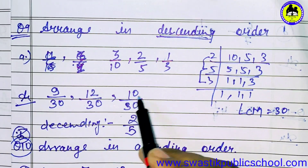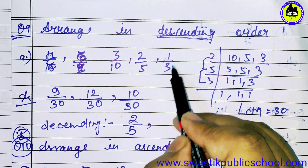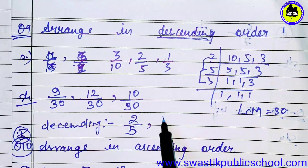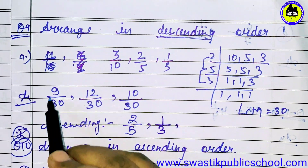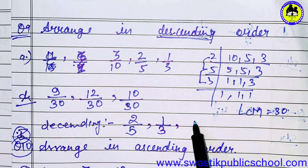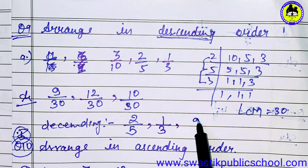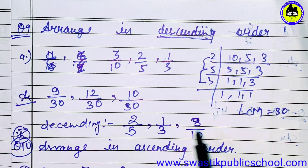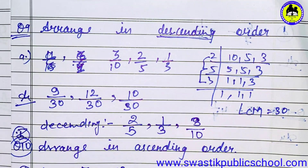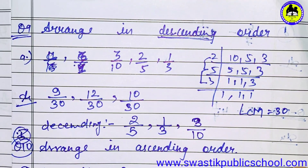10 upon 30 is the equivalent fraction of 1 upon 3. So then we write 1 upon 3 at the last position, and we write 3 upon 10 before it. So we place these fractions in descending order.